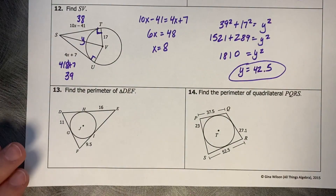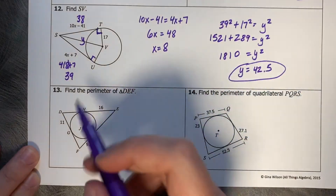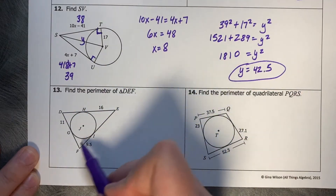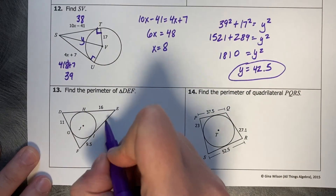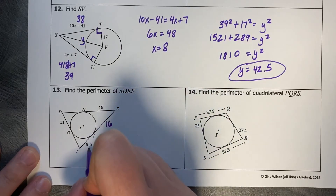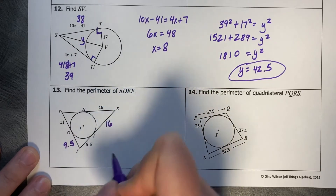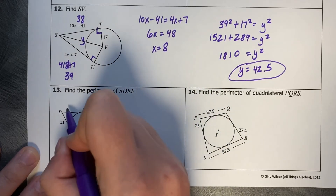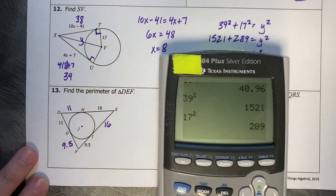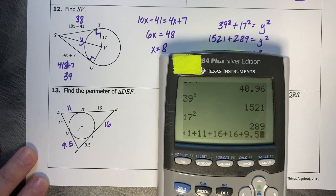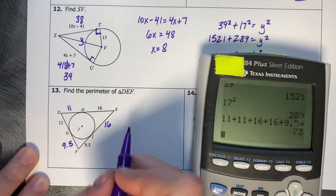The last two want us to find the perimeter of triangle DEF — that's the outer triangle. Since the tangent segments match, if this is 16 then this is 16; if this is 9.5 then this is 9.5; if this is 11 then this is 11. So we just add them all up: 11 plus 11 plus 16 plus 16 plus 9.5 plus 9.5 equals 73.